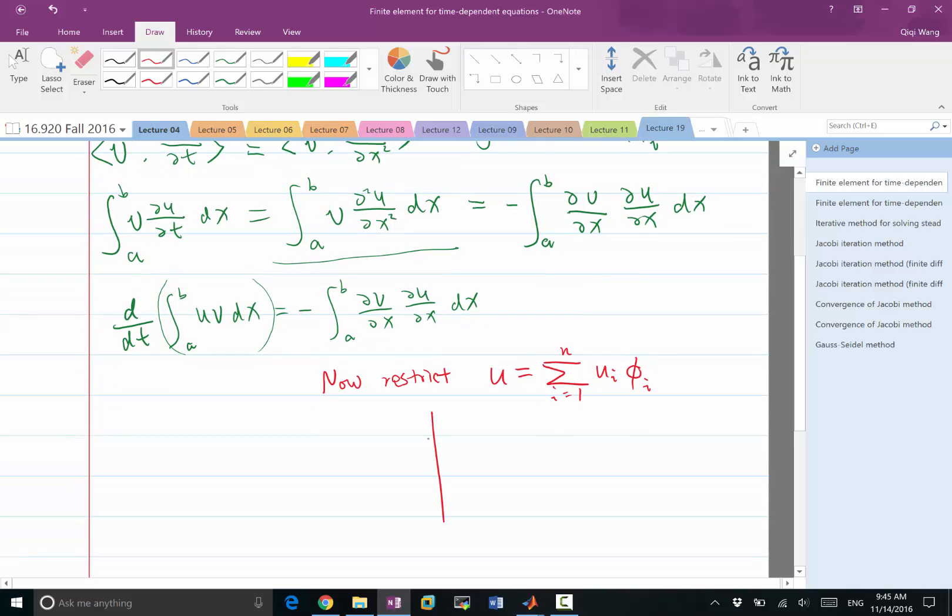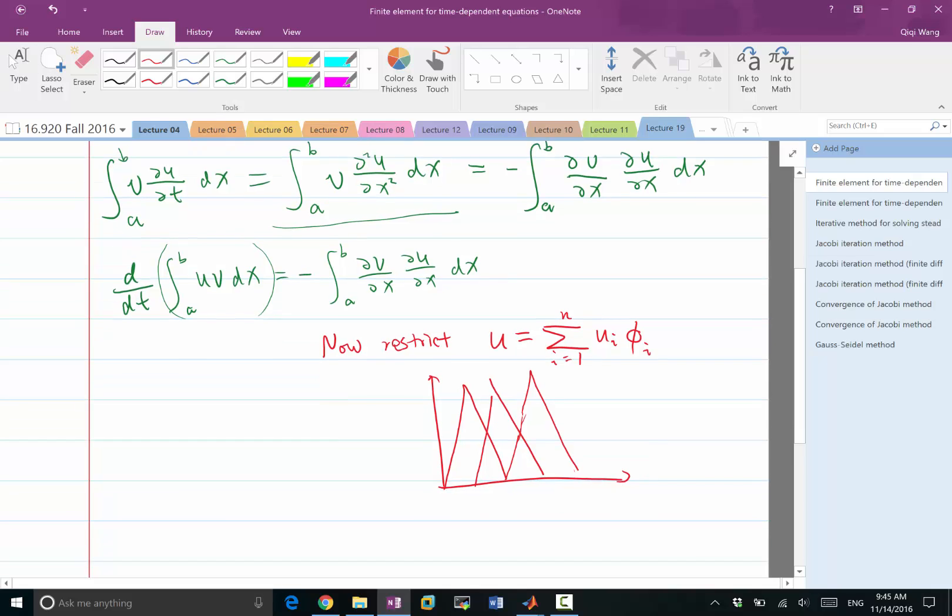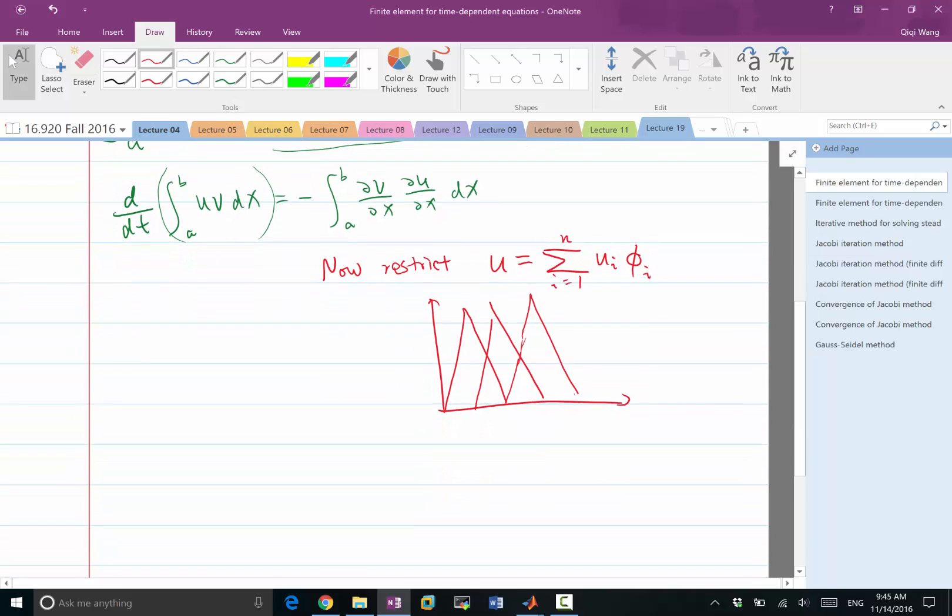Where the phi's, if we draw them, phi_1 is going to be like that, phi_2 is going to be like that in 1D, phi_3 is going to be like that. So these are the basis functions of the piecewise continuous and piecewise linear functions.